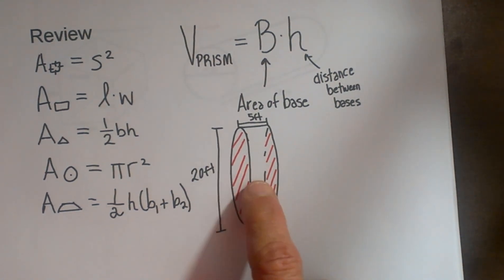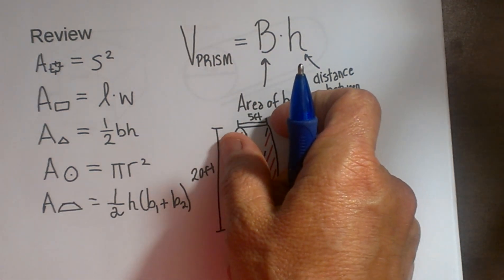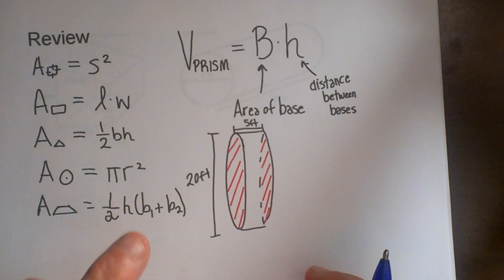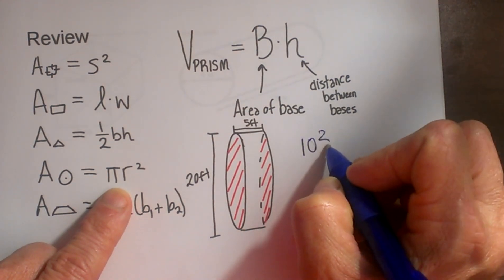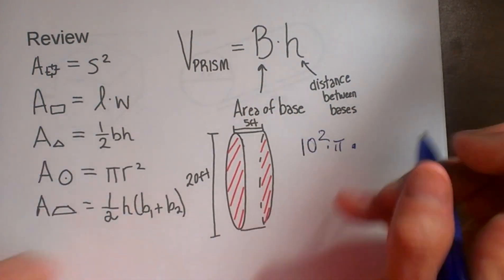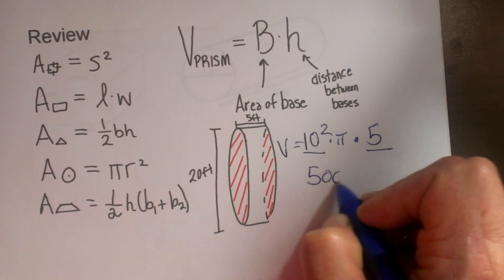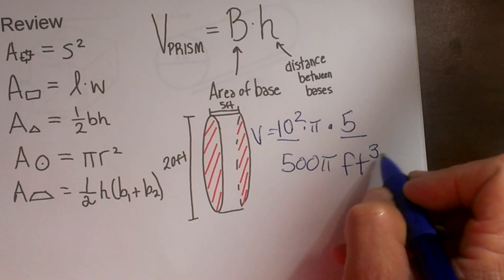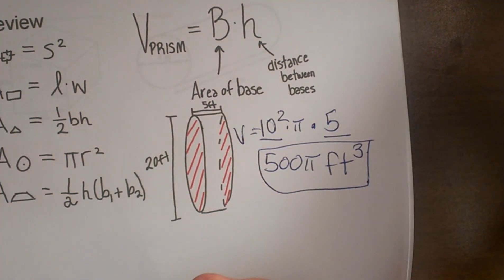This example has a circular base, so it's a cylinder. The diameter is 20 and the height is 5. The shaded parallel bases are circles. The radius is 10, so we plug in π r² times height: 10 squared is 100, times 5 gives 500π. The units are feet cubed because it's a three-dimensional volume.